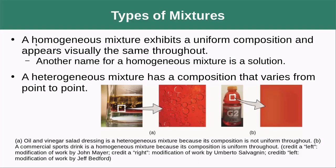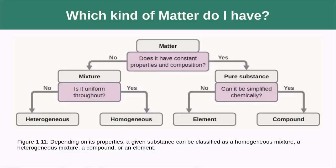A homogeneous mixture exhibits a uniform composition and appears visually the same throughout — another name for it is a solution. An example would be Gatorade: any sample you take looks completely uniform, but it's actually a mixture of sugar, water, dye, and other things. A heterogeneous mixture has a composition that varies from point to point. For example, salad dressing has vinegar at the bottom, oil at the top, and spices floating around — any sample you take would show it is not consistent throughout.